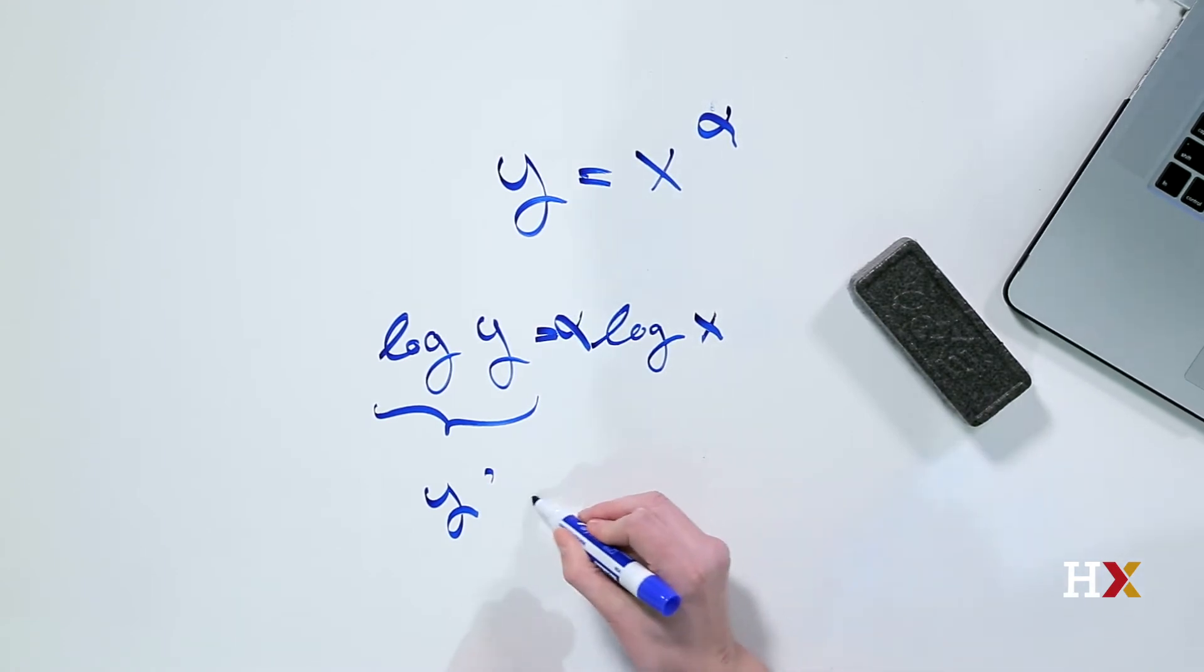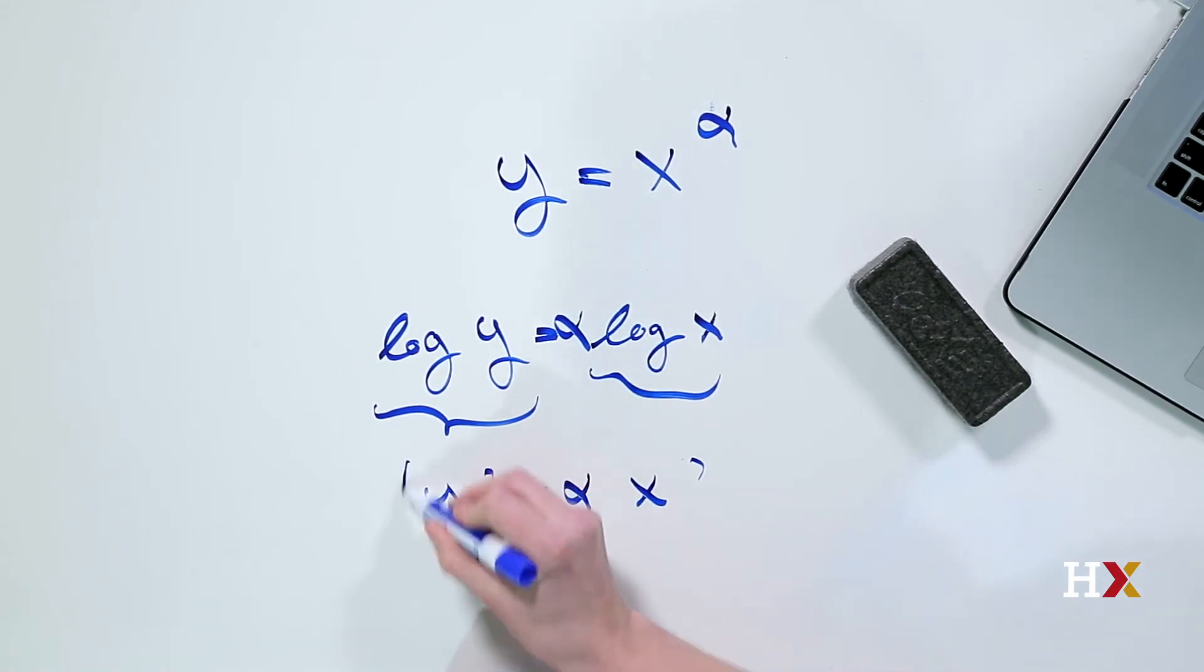I'm going to do the same for my x. My alpha stays put, so my log x becomes x prime. So you'll see that on these new axes, we have a much simpler equation: y prime is equal to alpha times x prime.